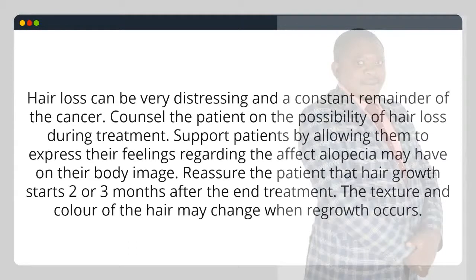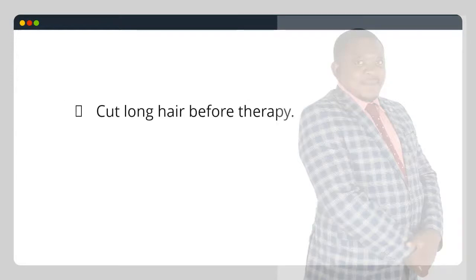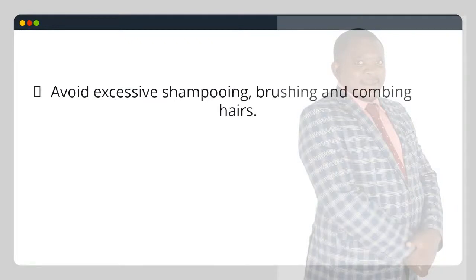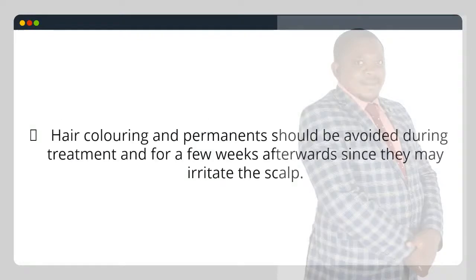Alopecia. Hair loss can be very distressing and a constant reminder of the cancer. Counsel the patient on the possibility of hair loss during treatment. Support patients by allowing them to express their feelings regarding the effect alopecia may have on their body image. Reassure the patient that hair growth starts 2 to 3 months after the end of treatment; the texture and color of the hair may change when regrowth occurs. Suggest ways to cope with hair loss such as use of hairpieces, wigs and scarves. Cut long hair before therapy. Avoid excessive shampooing, brushing and combing. Avoid use of electric hair dryers, curlers and curling irons.